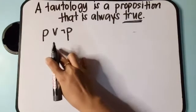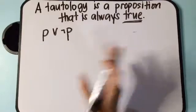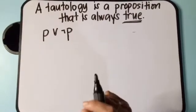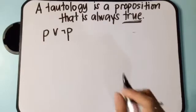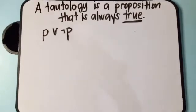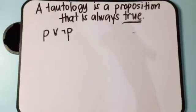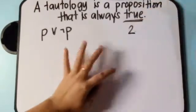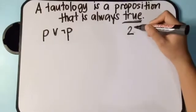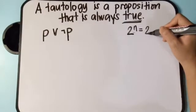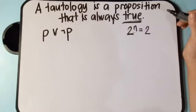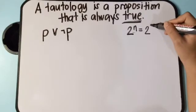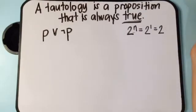Let's have an example: P or not P. As you can see, only one proposition is used, which is proposition P. So, how many possible truth values does proposition P have? We use the formula 2 raised to N, where N is the number of propositions used. So 2 raised to 1 is 2 — therefore, we only have two rows in our truth table.